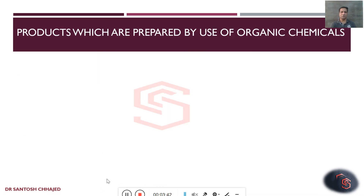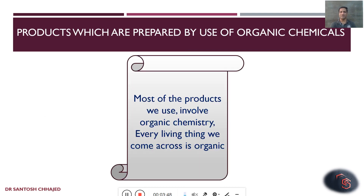If we try to think about products — what products I can prepare using chemicals, maybe organic or inorganic — I will say most of the products what we use involve either organic or inorganic chemistry. Even every living thing we come across is known to contain organic and inorganic material inside it. Whatever hormones are there, whatever proteins are there, whatever endogenous neurotransmitters are there in our body, maybe DNA, RNA — all are nothing but chemical in nature.